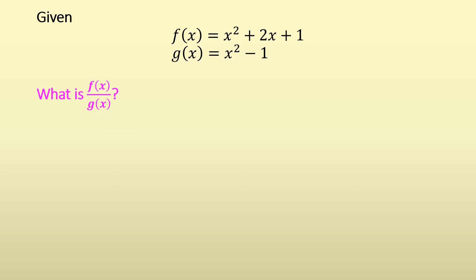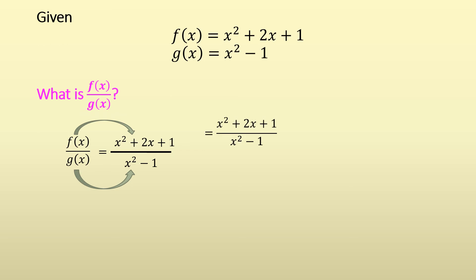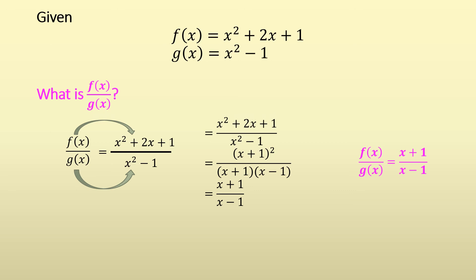Now let's have the division example. Given f(x) = x² + 2x + 1 and g(x) = x² − 1, we want to divide f by g. We write the numerator x² + 2x + 1 over the denominator x² − 1. We can use factoring: the numerator factors as (x + 1)², and the denominator factors as (x + 1)(x − 1) — difference of two squares. Cancelling the common factor, the final answer is (x + 1)/(x − 1). So the quotient f/g equals (x + 1)/(x − 1).